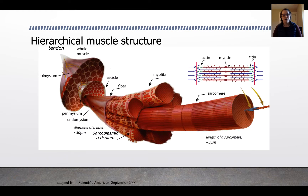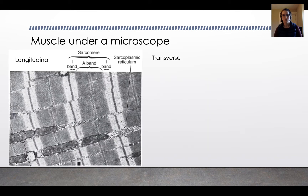Muscle has a hierarchical structure made of actin, myosin, and titin, arranged into sarcomeres, which are arranged into myofibrils, which are arranged into fibers, which are arranged into fascicles, which are arranged into the whole muscle. You've watched a video already about the structure of muscle and how it contracts — the actin-myosin cross-bridging.